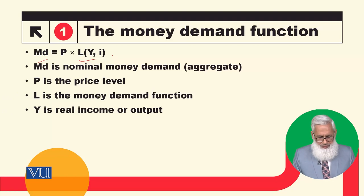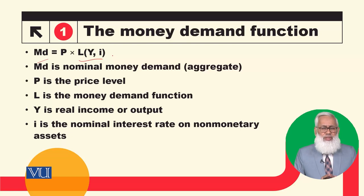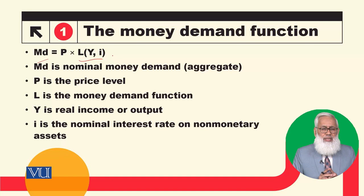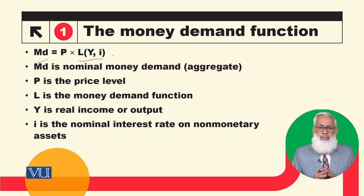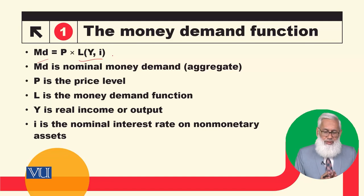One variable is Y, that is real income or output. The second is I — it is the nominal interest rate on non-monetary assets. In the last module we discussed that there are many kinds of interest rates, so we simplified by using I to denote the interest rate on all non-monetary assets, and I_M to show the interest rate on money.